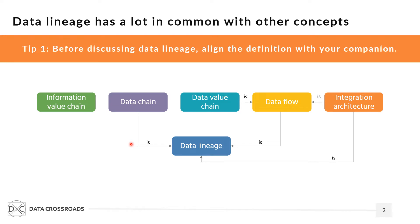In practice, it means the following. Let's assume two professionals speak with each other. One talks about a data flow, another uses the term data lineage. At the end, it may happen that they are speaking about the same subject. In another case, two people talk about data lineage but with totally different meanings behind them.